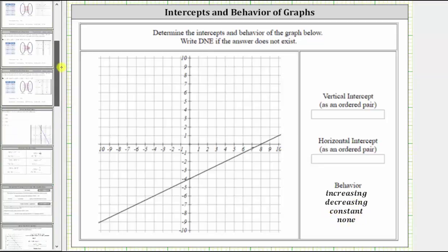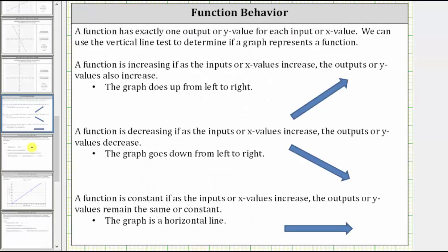For a quick review, a function is increasing if as the inputs or x values increase, the outputs or y values also increase, which means the graph goes up from left to right. A function is decreasing if as the inputs or x values increase, the outputs or y values decrease, which means the graph goes down from left to right.